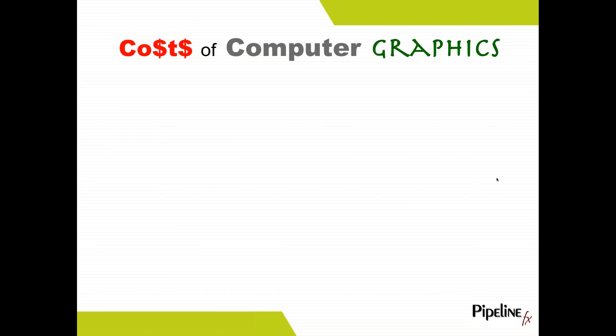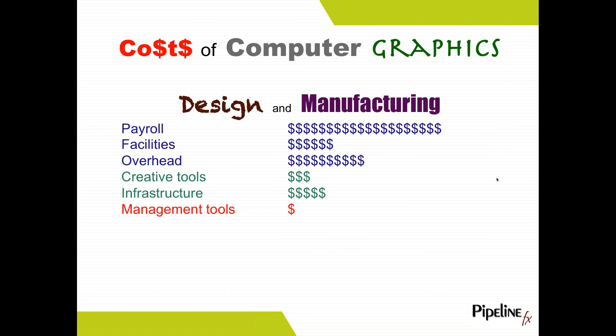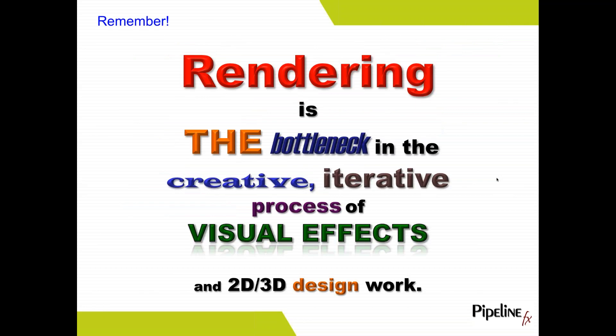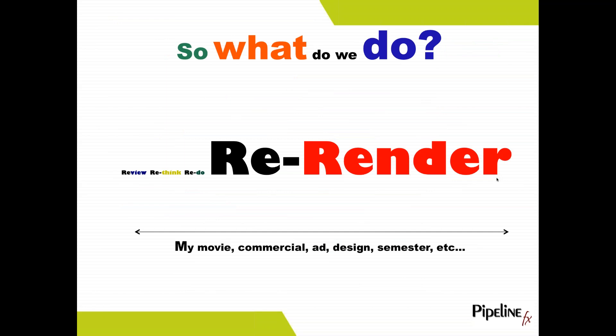When we look at the cost of computer graphics for design and manufacturing, we're trying to do high-level renderings and representations of what we're working on. Payroll is generally the biggest expense, but we have significant facilities and overhead expense. Creative tools are not as much relative to the rest, but the management tools are the things that have been lacking. How can we manage it and maximize the use of it? Rendering is the bottleneck in the iterative process — and we've got this re-rendering issue that just keeps getting longer.